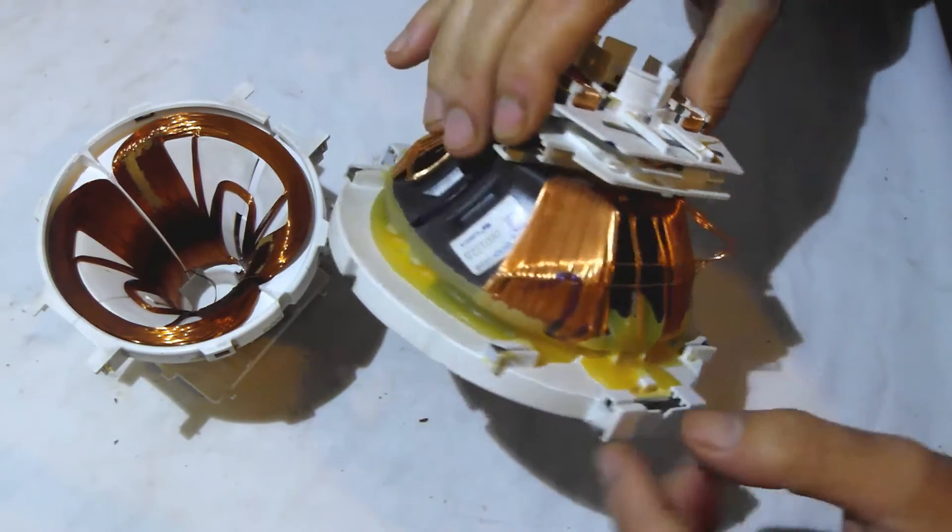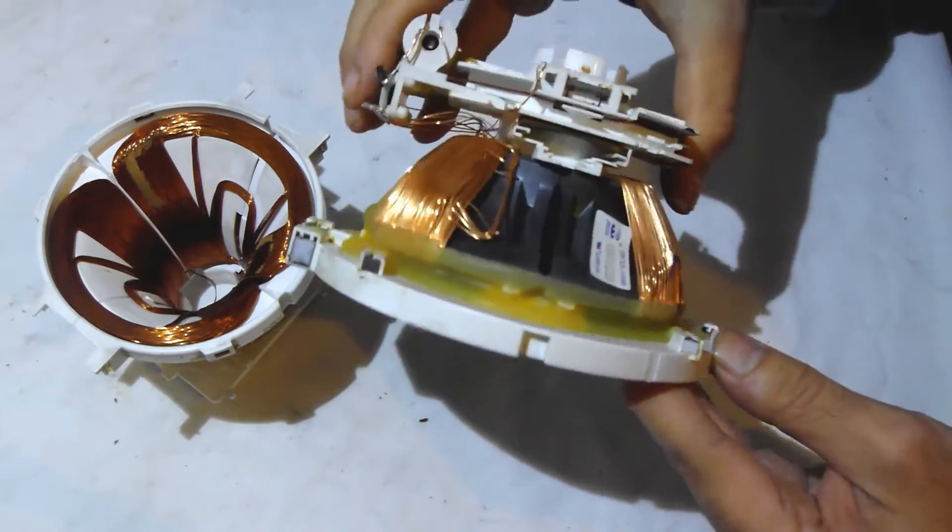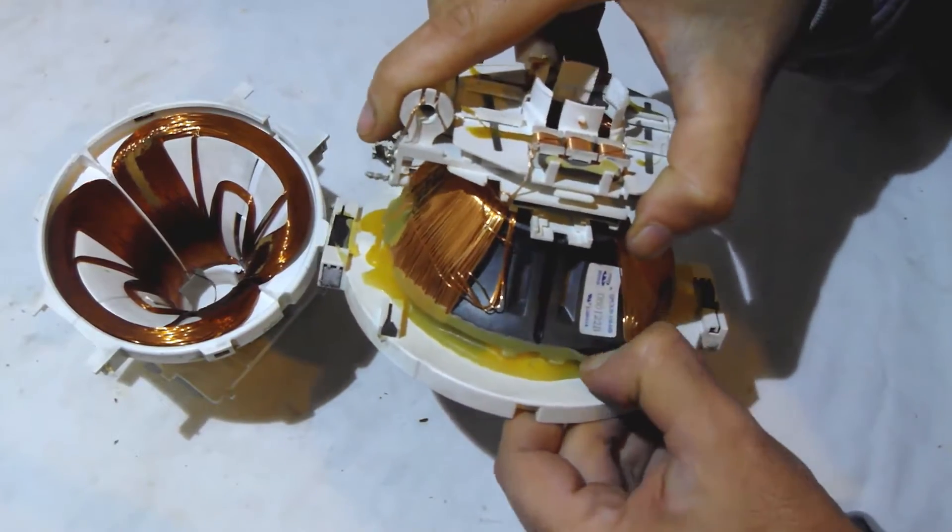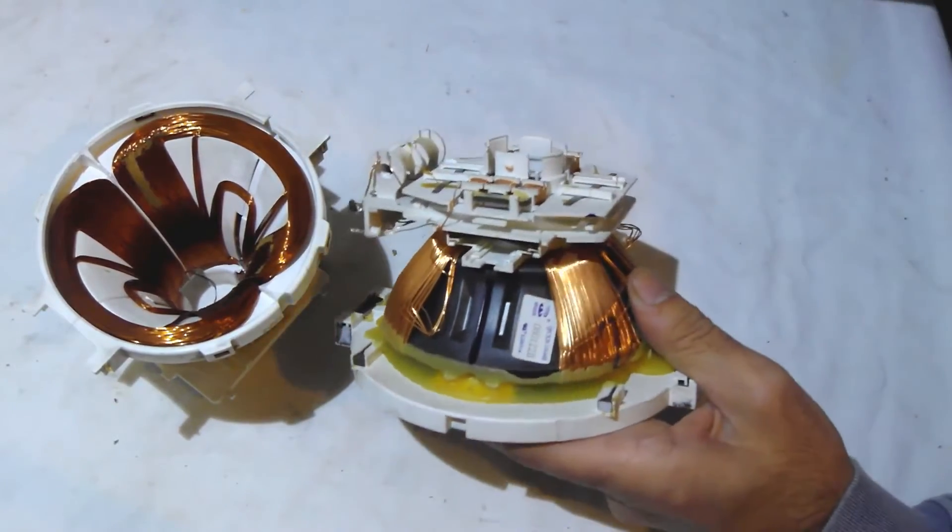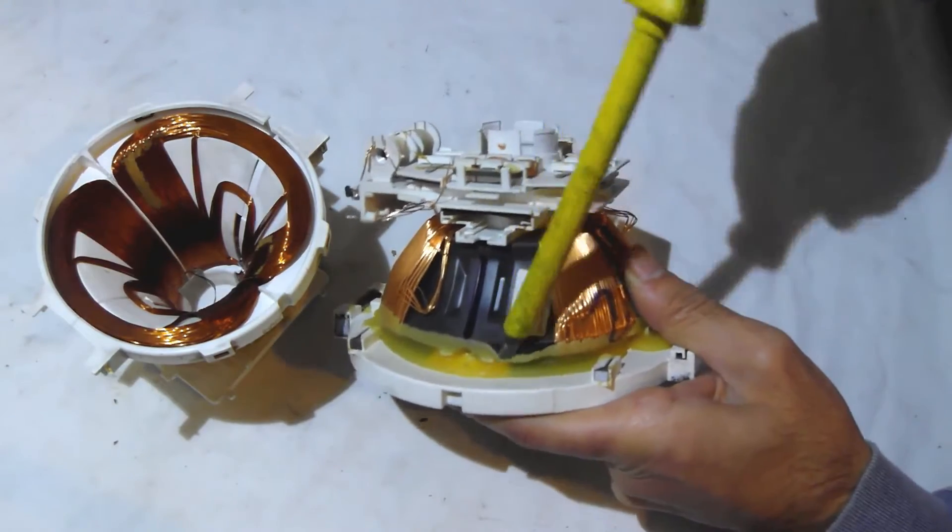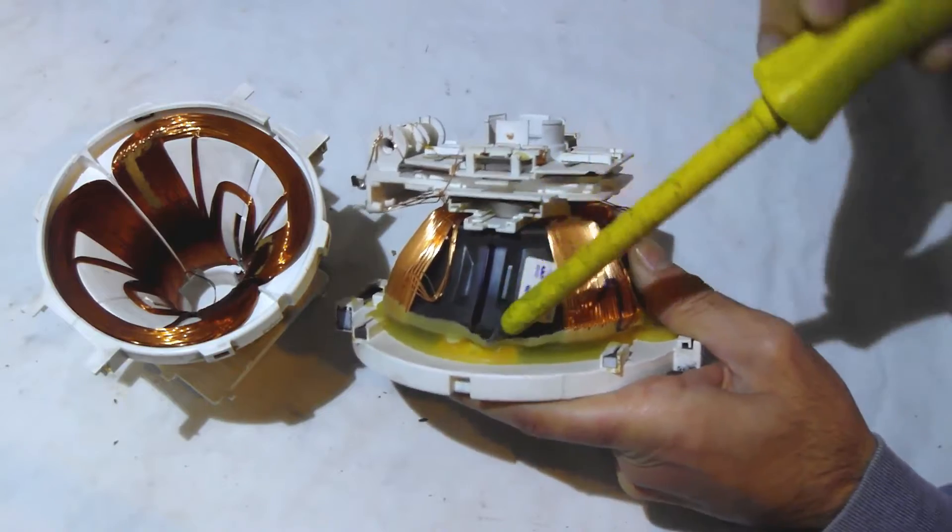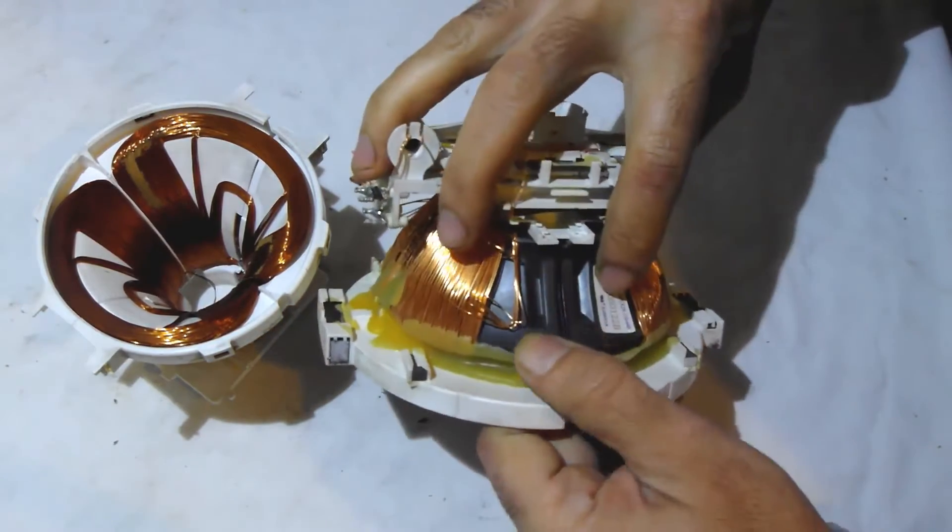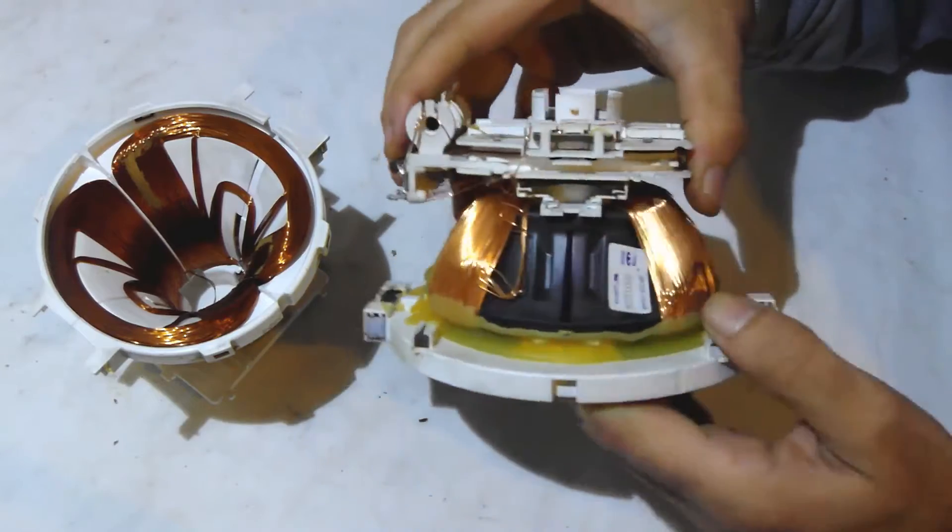But before we can do that, we need to get this glue off. Some manufacturers use a lot of glue like in this case, and others use a little bit. So if you just chip away at this it will easily come away. Just peel away at it.